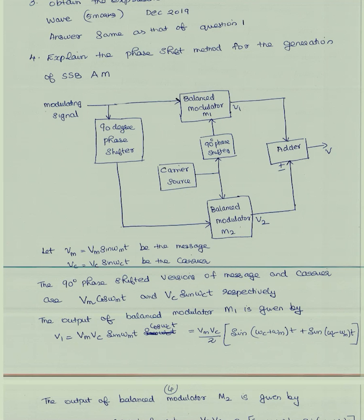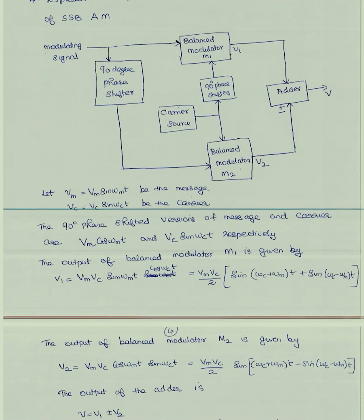The third question: Explain the phase shift method for the generation of SSB. SSB is Single Side Band. In the phase shift method block diagram, two balanced modulators M1 and M2 are used along with two 90-degree phase shifters connected to the inputs of the modulators. The message signal Vm = Vm sin(ωm·t) and carrier signal Vc = Vc sin(ωc·t) are applied.